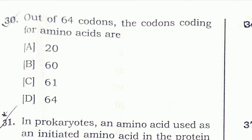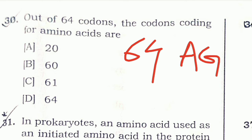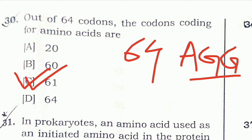Question 30: Out of 64 codons, how many codons code for amino acids? There are 64 total codons, but 3 are nonsense codons or stop codons that do not code for any amino acid. So if we subtract 3 from 64, we get 61. The right answer is 61.